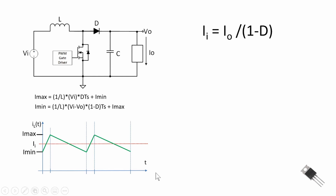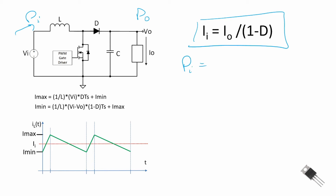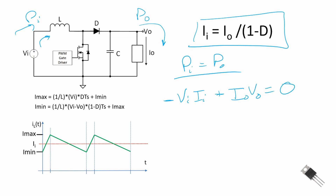Now let's derive the equation relating input current to output current. Here we assume power in equals power out. Using the passive sign convention, the conservation of energy means that input power equals output power, so: V_in · I_in = V_out · I_out.